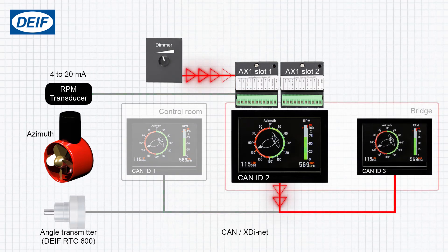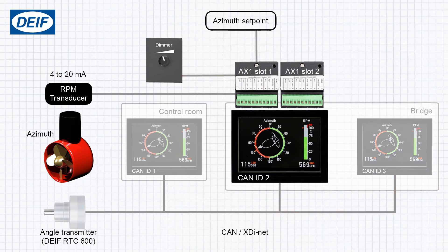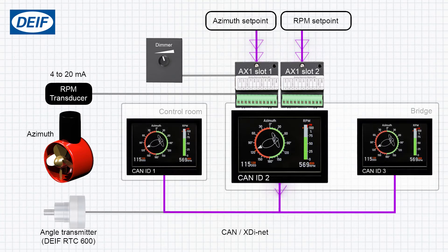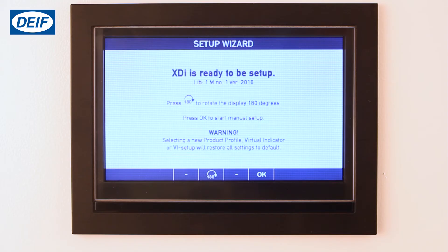A dimmer is also connected to the first analog module, and the value is transmitted over XDInet to all the XDIs in the same dimmer group. The azimuth setpoint value is connected to the first analog module and the RPM setpoint to the second analog module. Both of these are also transmitted over XDInet to all the XDIs.